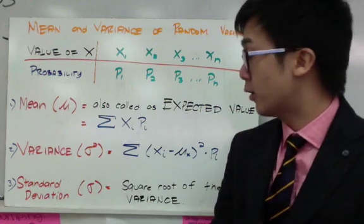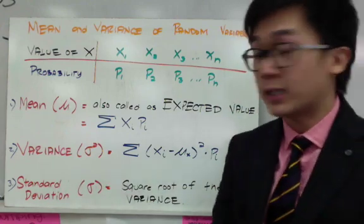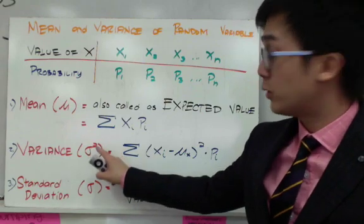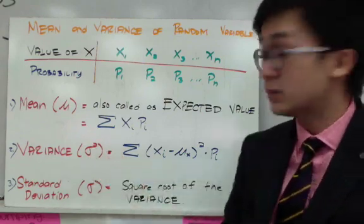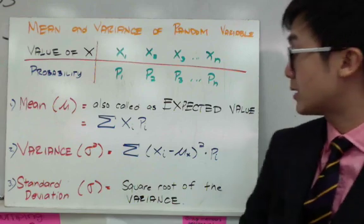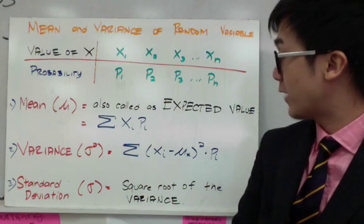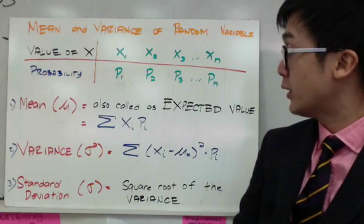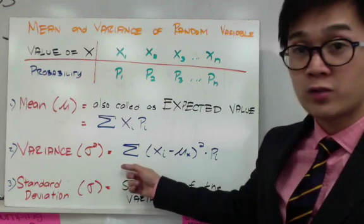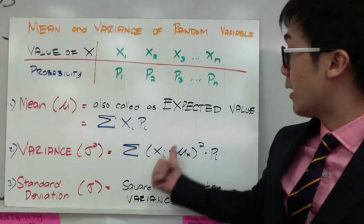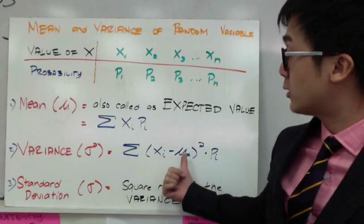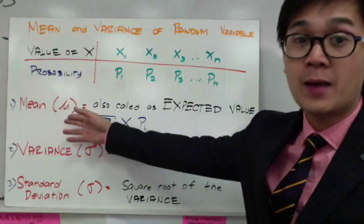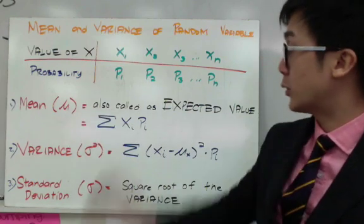For the second measure, we have the variance, denoted by sigma squared. To find the variance, the formula that you will use is the summation of the square of the difference of x sub i minus mu of x times p sub i. If you'll notice in the formula for the variance, you should have your mean ready to be able to use the formula for the variance. Before you can use this, you need to find the mean of the distribution first.